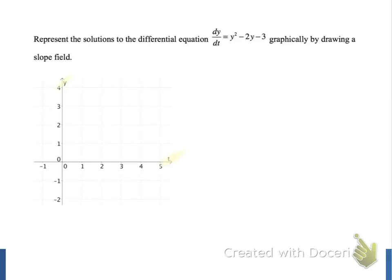When we look at our differential equation, we notice that the right-hand side is a polynomial that factors nicely into two factors: y plus 1 and y minus 3. That's going to make our first steps a little easier. Let's start with the values where y is equal to negative 1 on our grid. If y is equal to negative 1, then the first factor is going to be equal to 0.